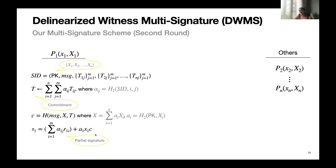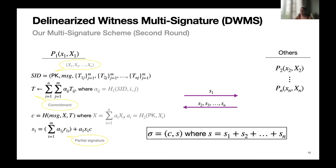They exchange the partial signatures with each other. The final signature is (C, S), where S is the sum of all partial signatures.